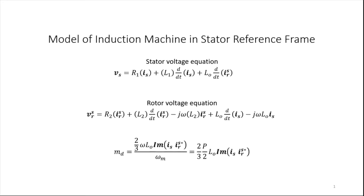Where omega is the rotary speed in electrical radians per second. And the expression for developed torque is Tmd equal to (2/3)·(p/2)·L0 times the imaginary part of Is·Ir* referred to stator conjugate.